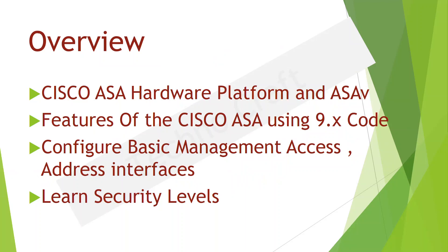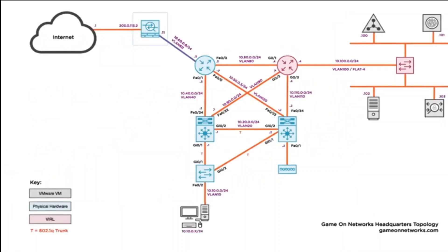Security levels control how traffic flows through the ASA — a very important aspect. Now our customer, Game On Networks, of course has an ASA in their environment and that ASA is what gets them out to the internet. We are going to be working on that ASA, so that's where the focus of the course is going to be — understanding how we apply these different firewall features to a customer network just like Game On Networks. We'll start out by talking about the platform itself.